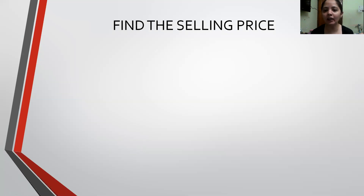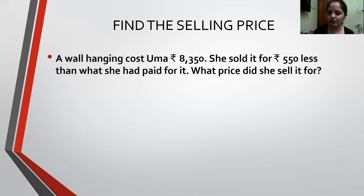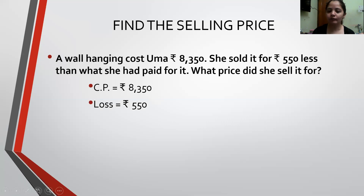Now another example where we are having losses. It says: find the Selling Price. A Wall Hanging costs Rs. 8,350. She sold it for Rs. 550 less than what she had paid for it. That means how much did she pay? Rs. 8,350 — so my Cost Price is Rs. 8,350. She is selling it for Rs. 550 less, which means it is a Loss of Rs. 550.